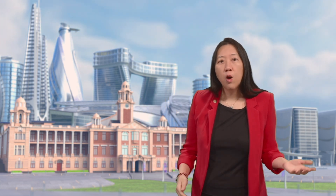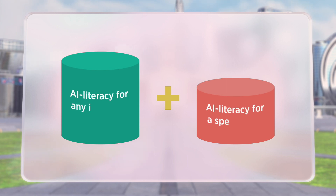The basic level of AI literacy represents a general understanding for the average individual. However, for different disciplines and different roles, there are other specific AI literacies. So depending on the role, it would be AI literacy for an individual plus AI literacy for a specific role.